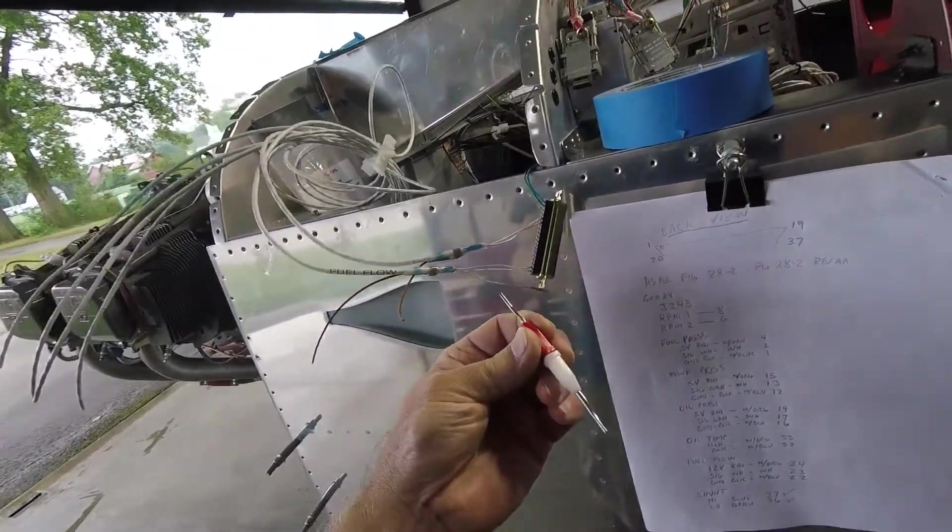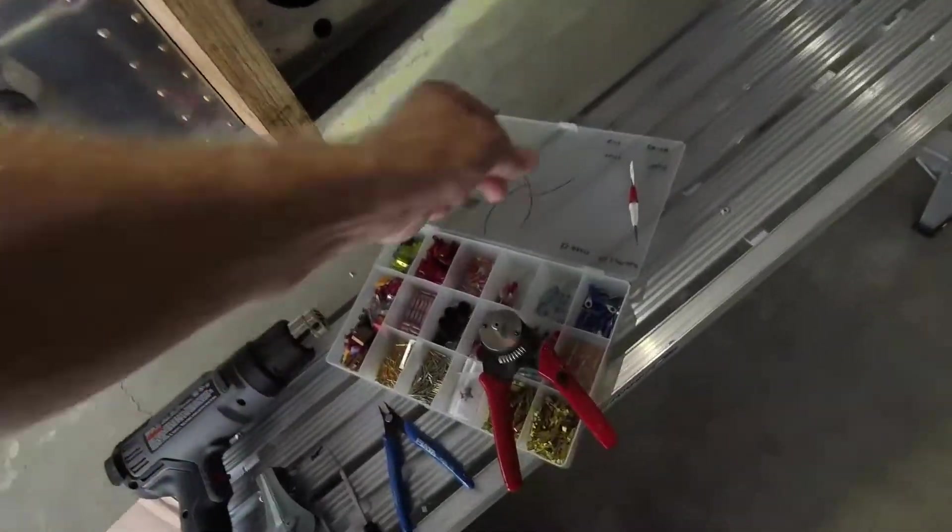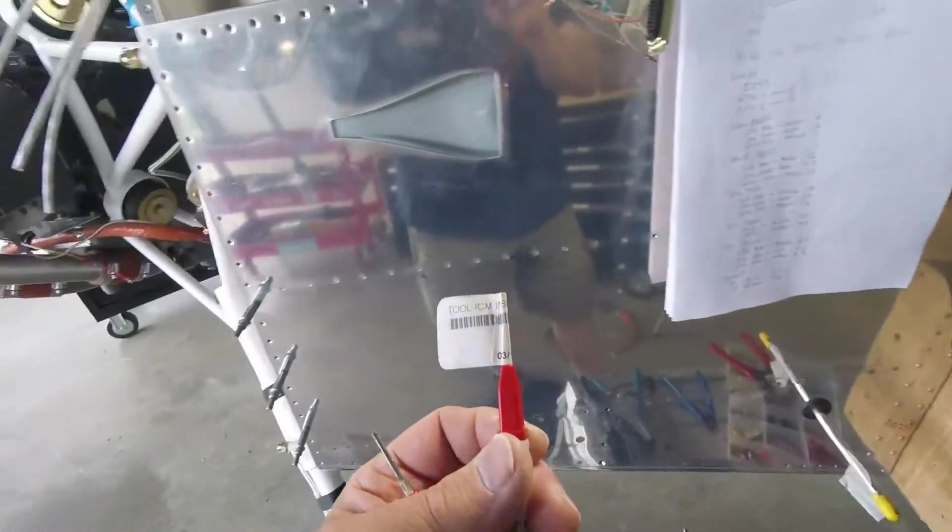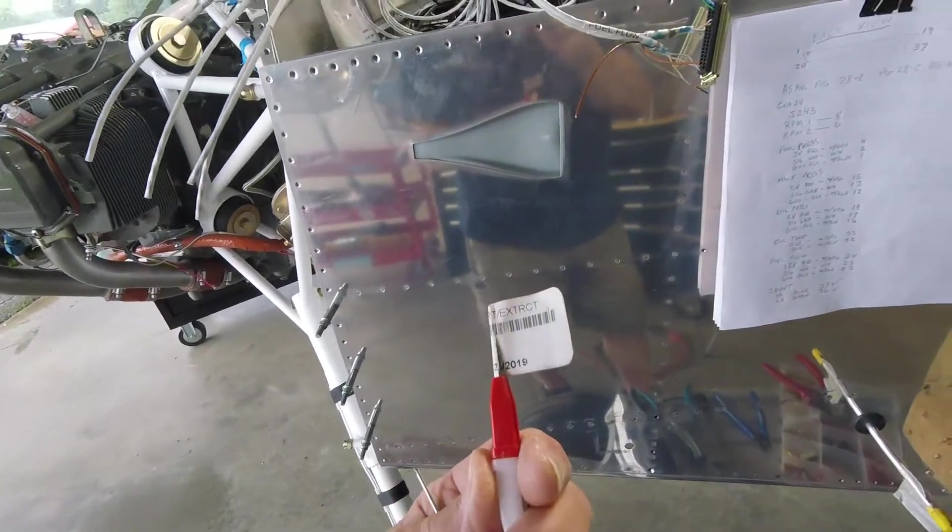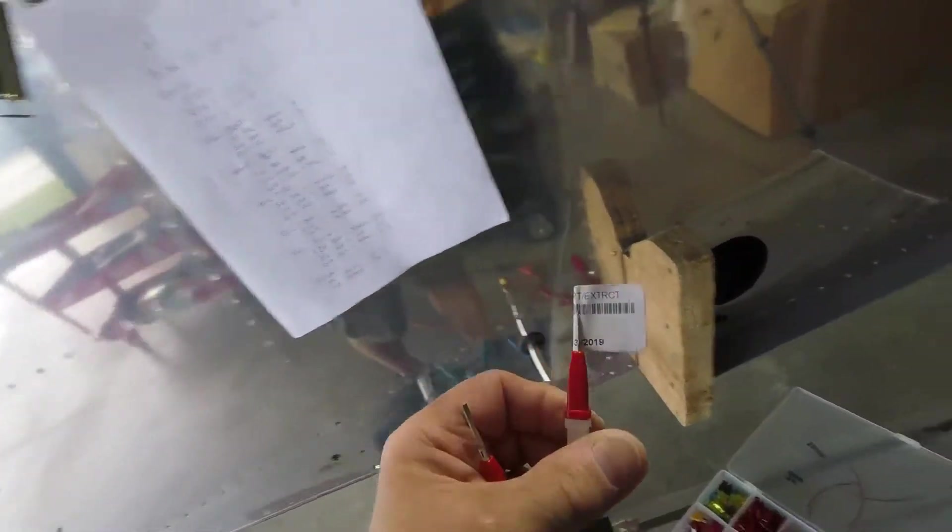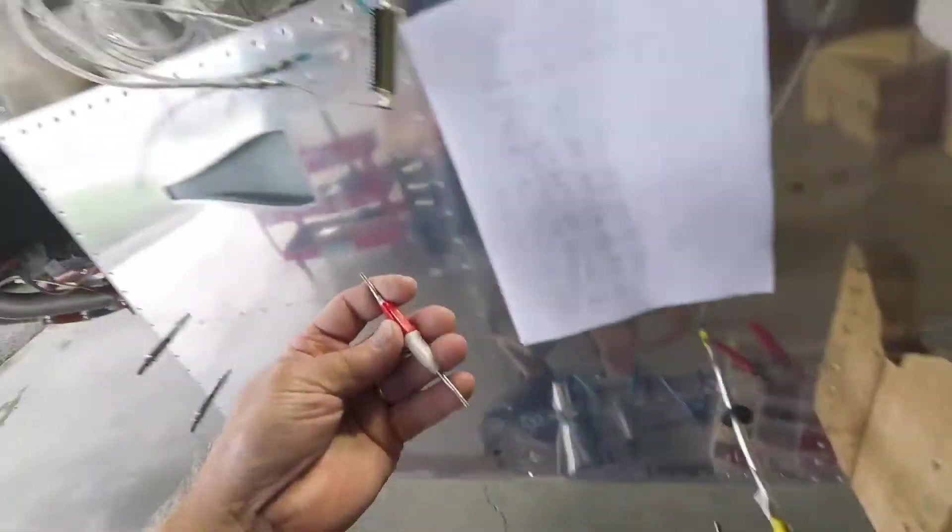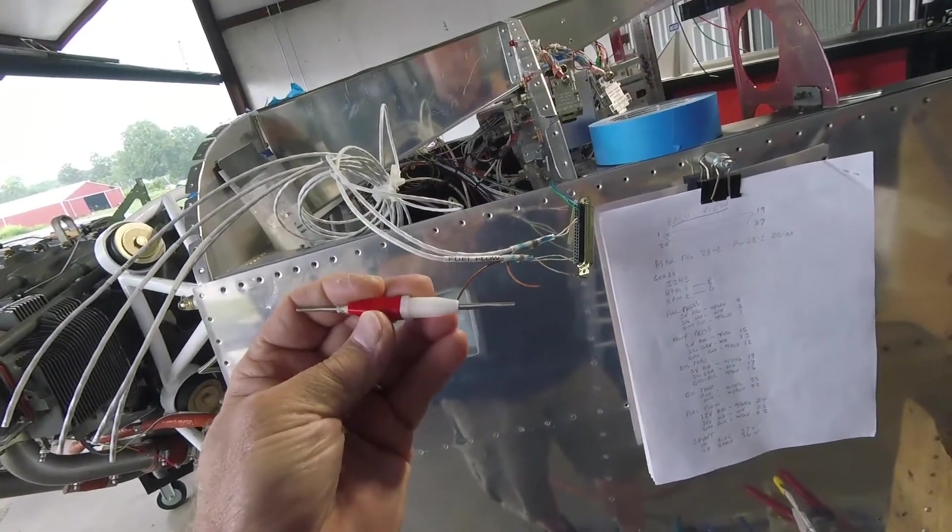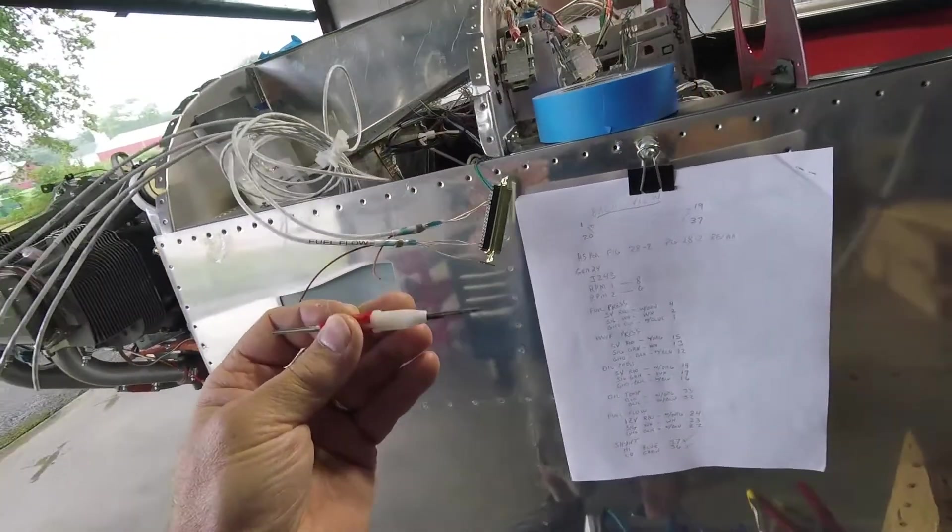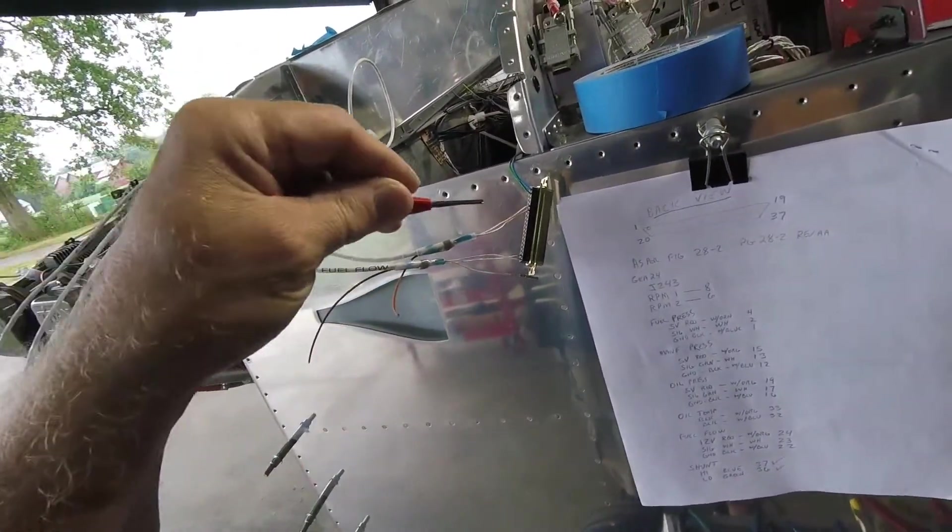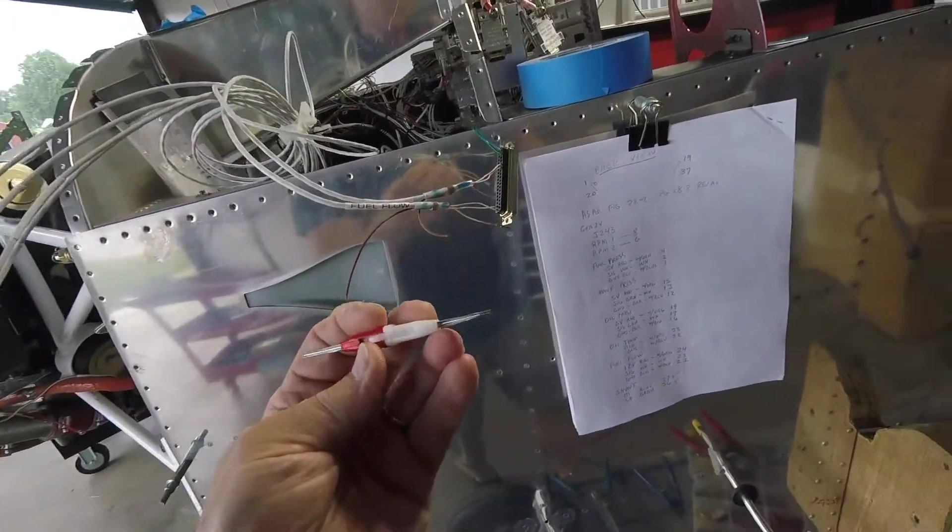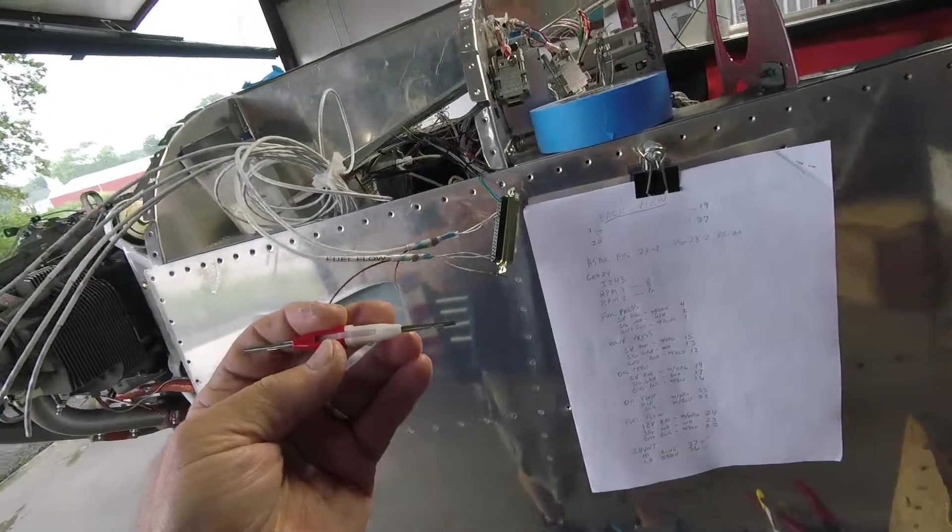We're using the tool you get from Vans Aircraft. Tool ICM Insert Extract. That's the right tool you need to use. We use the white end of it to extract the pins. The red end is to install the pins.